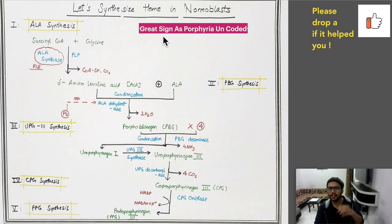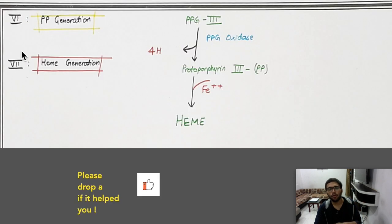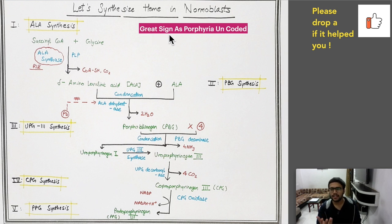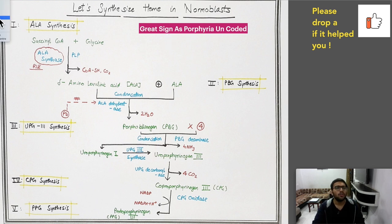The mnemonic for heme synthesis is: 'It's a Great Sign AS Porphyria Is Finally UnCoded.' Breaking it down — G for glycine + succinyl CoA, A for ALA (aminolevulinic acid), P for porphobilinogen, U for uroporphyrinogen, C for coproporphyrinogen, then protoporphyrinogen → protoporphyrin → heme.